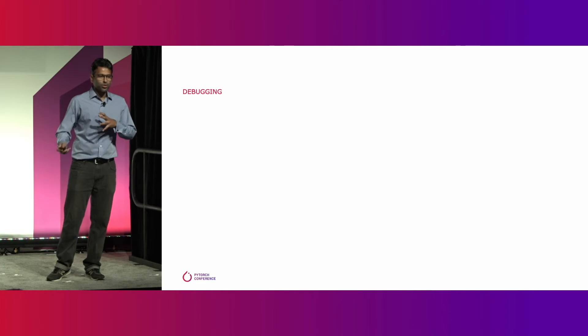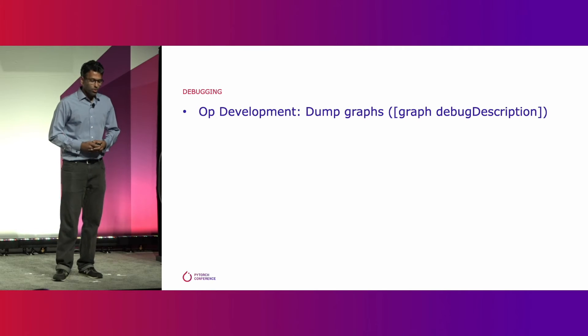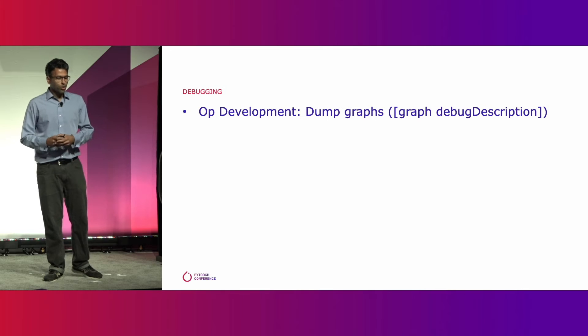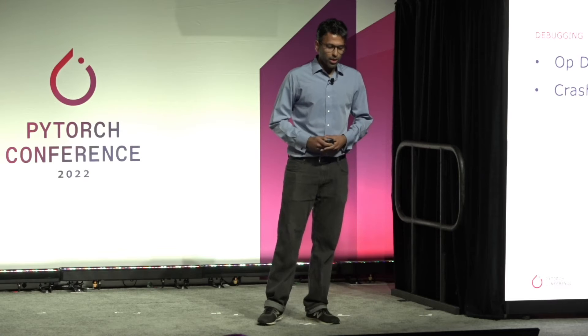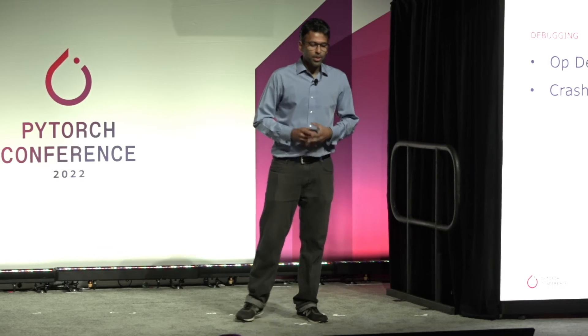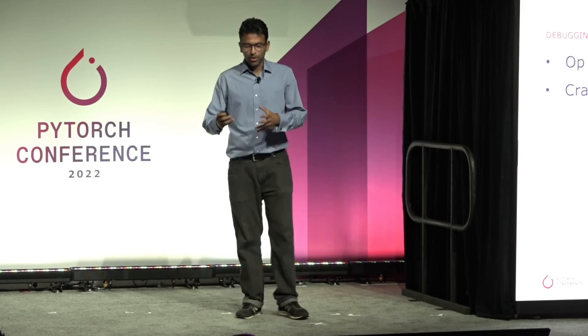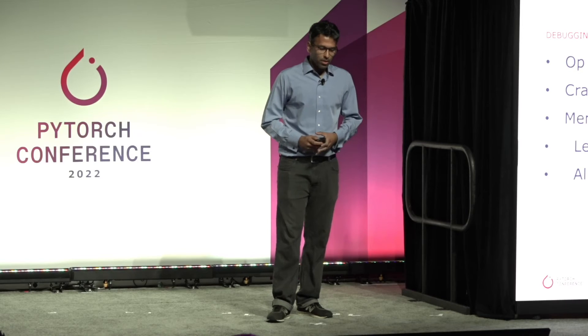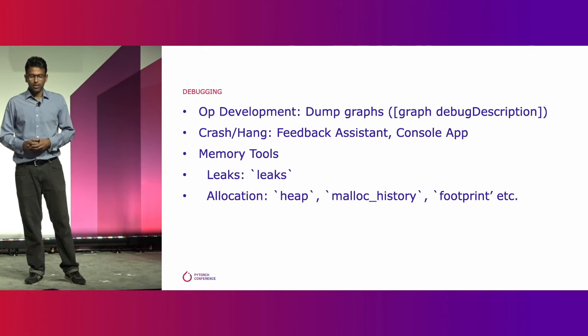Now I'll provide some pointers which I found helpful for debugging while developing on the MPS backend. When writing an operation with our MPS Graph API, it can be useful to dump the underlying graph for more details and introspection. If you run into a crash or hang coming from our OS frameworks such as Metal or MPS Graph, please file a bug using Feedback Assistant. The Console app on Mac is also quite useful to get more information on backtraces, spin dumps, and logs. On the memory side, there are good command line tools such as leak, heap, and footprint, which allow you to do detailed memory analysis. We will provide more details on our wiki page.